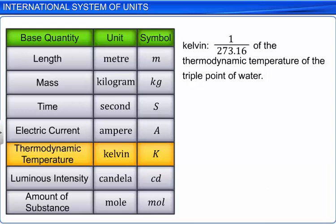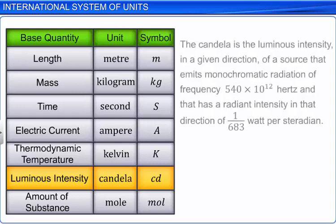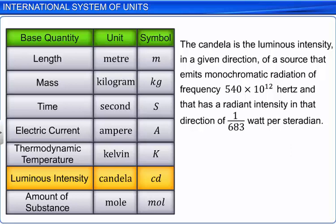Luminous intensity is measured in candela, denoted by the small letters cd. A candela is the luminous intensity in a given direction of a source that emits monochromatic radiation of frequency 540 into 10 power 12 hertz...